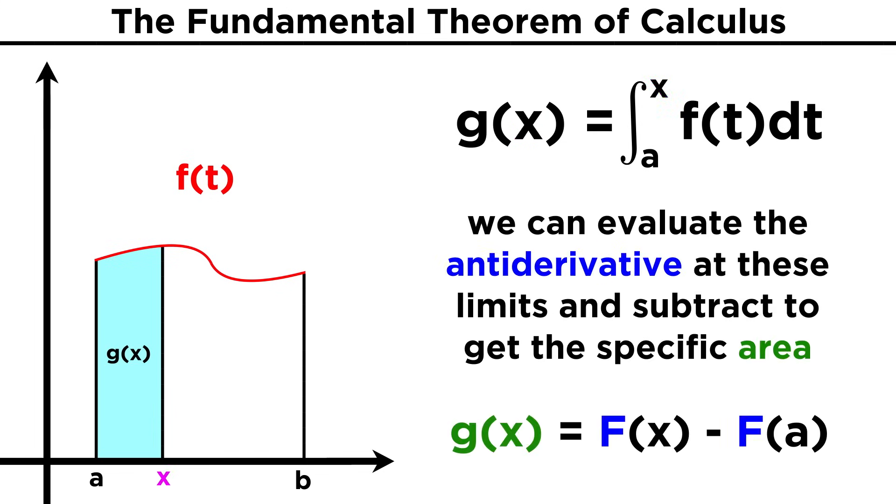If x is a specific number, instead of getting a new function, we would use the antiderivative of f and evaluate for the limits of integration to get a number. This would be the area of this section under the curve.